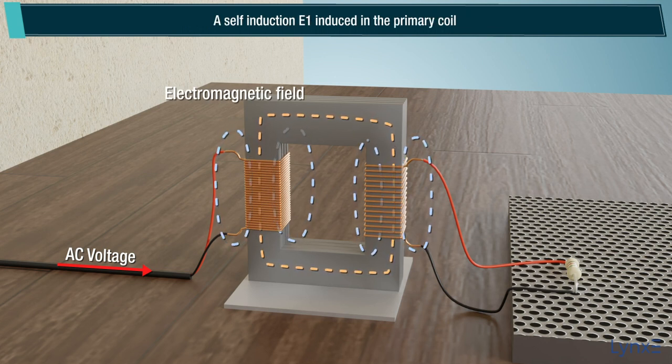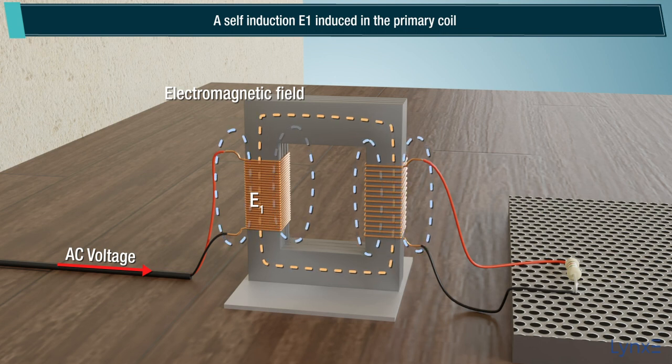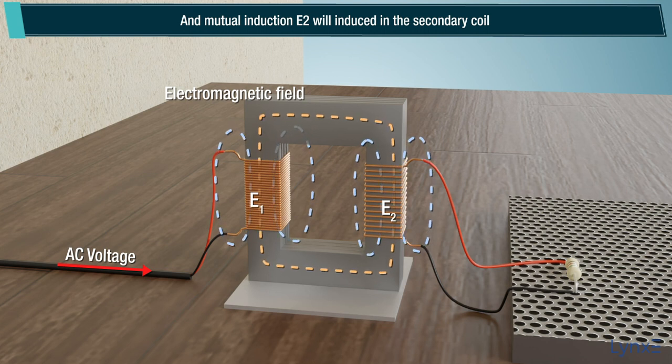A self-induction E1 induced in the primary coil, and mutual induction E2 will induced in the secondary coil.